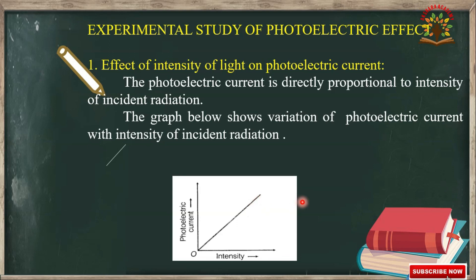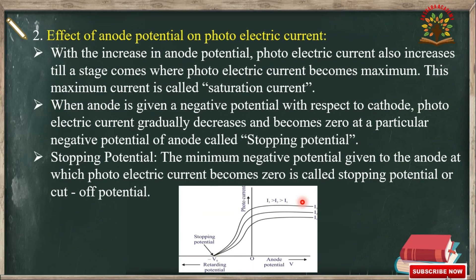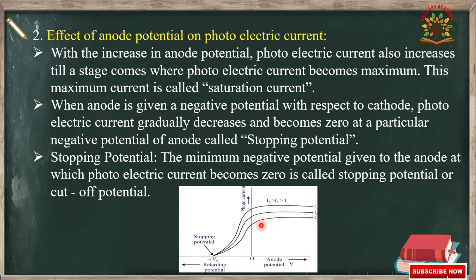There is a linear relation between photoelectric current and intensity of incident radiation. The second observation is the effect of anode potential on photoelectric current. A graph is drawn between anode potential on the x-axis and photoelectric current on the y-axis. Initially, with increase in anode potential, photoelectric current also increases, until a stage comes where photoelectric current becomes maximum. This maximum photoelectric current is called saturation current.